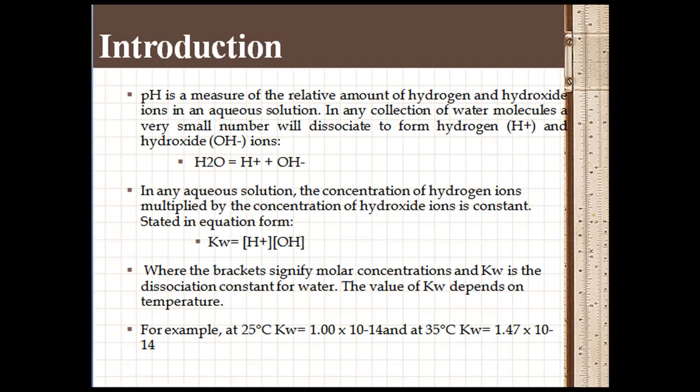In aqueous solution, the concentration of hydrogen ions multiplied by the concentration of hydroxide ions is constant. Kw equals H+ times OH-, where the brackets signify molar concentration and Kw is the dissociation constant of water.